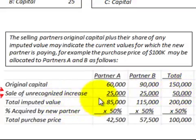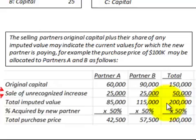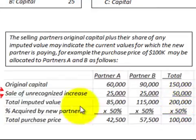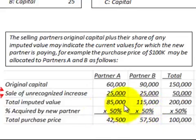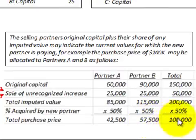The imputed value totals — original capital plus the sale of the unrecognized increase — give Partner A $85,000 and Partner B $115,000, equaling the total imputed value of $200,000. The percent acquired by the new partner was 50% from A and 50% from B. Multiplying: the total purchase price attributed to Partner A is $42,500 and to Partner B is $57,500, for a combined total of $100,000 purchased by Partner C.